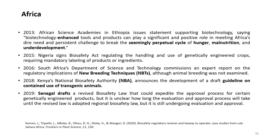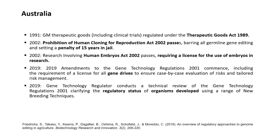In Australia, various regulatory developments have taken place since 1991 when GM therapeutic goods were regulated under the Therapeutic Goods Act 1989. In 2002, the Prohibition of Human Cloning for Reproduction Act was passed, banning all germline gene editing and setting a penalty of 15 years in jail. Also in 2002, the Research Involving Human Embryos Act was passed requiring a license for the use of embryos in research. In 2009, amendments to the Gene Technology Regulations of 2001 were commenced including the requirement of a license for all gene drives to ensure case-by-case evaluation of risks and tailored risk management.